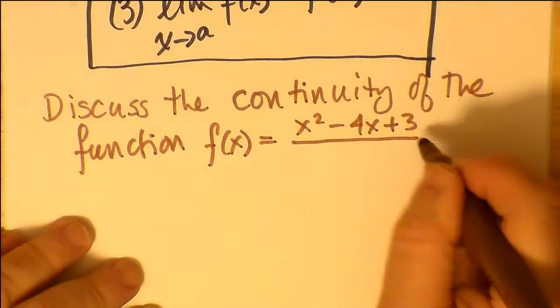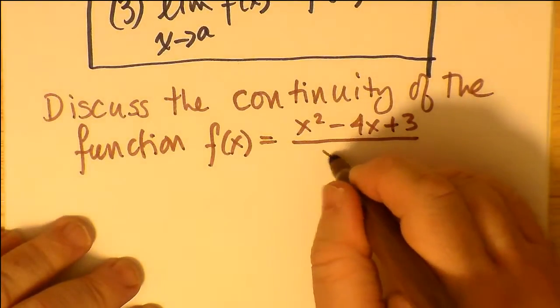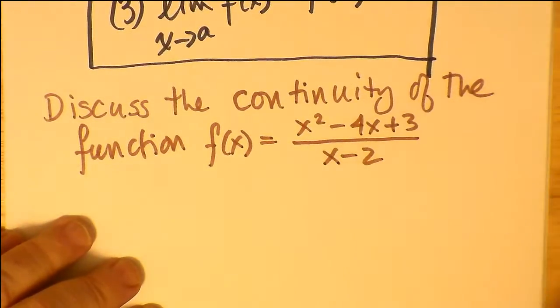And finally, a point discontinuity where it's the same value on both sides but lo and behold, there is no f(x) defined at x.